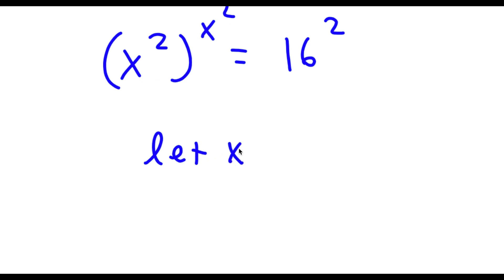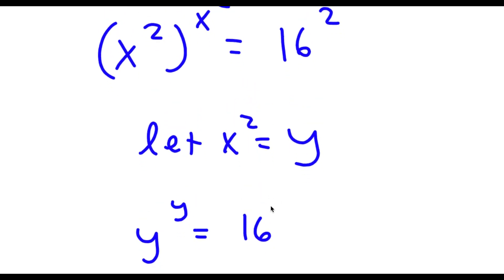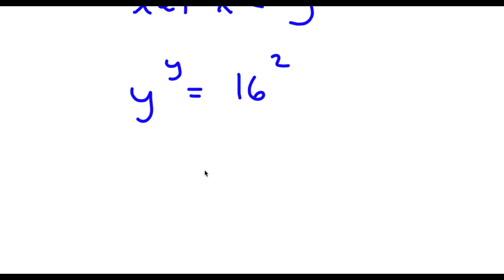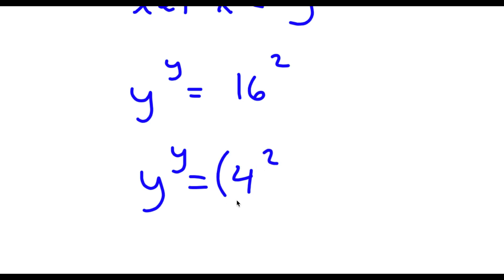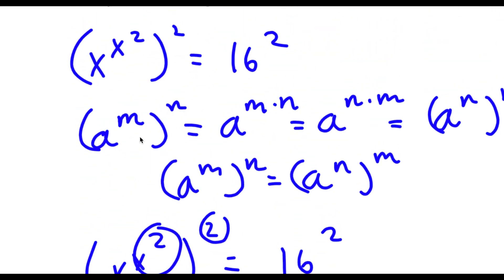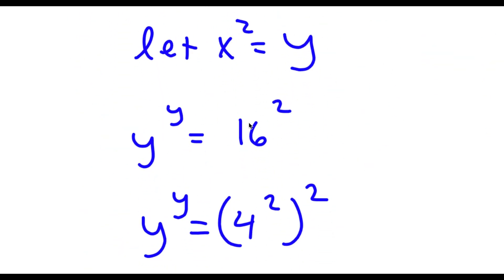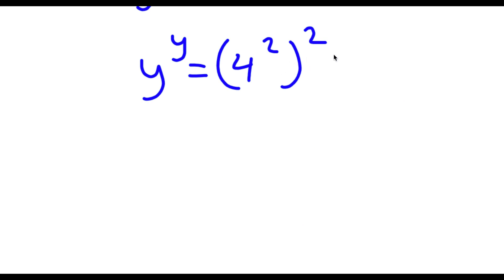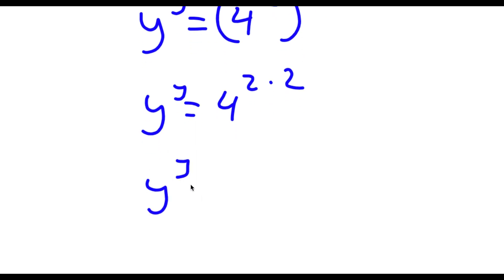Now I'm going to let x to the power of 2 equal the variable y. So now I have y to the power of y is equal to 16 to the power of 2. Now 16 is the same thing as 4 to the power of 2. So now I have y to the power of y is equal to 4 to the power of 2 to the power of 2. And 4 to the power of 2 to the power of 2 equals 4 to the power of 2 times 2. And 2 times 2 equals 4, so I have y to the power of y is equal to 4 to the power of 4.